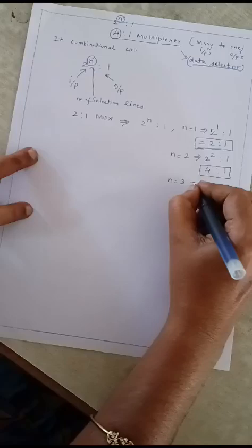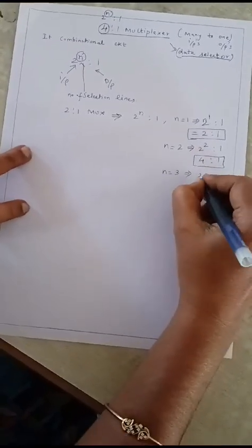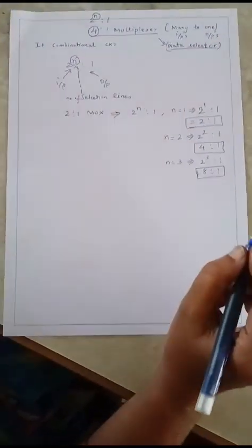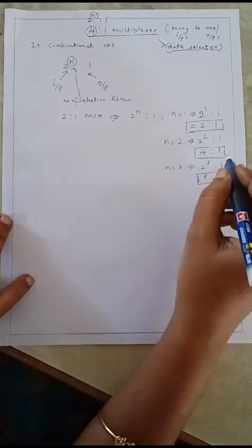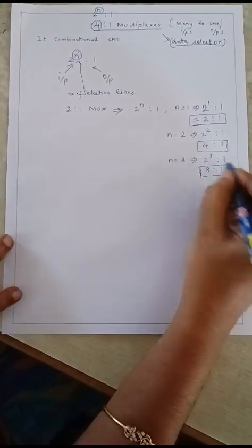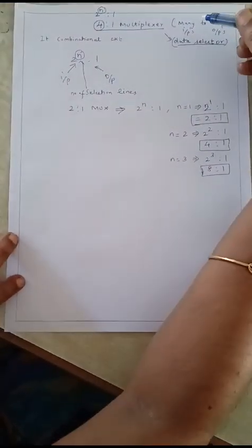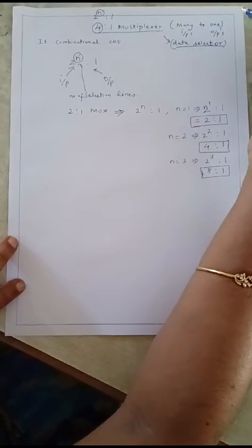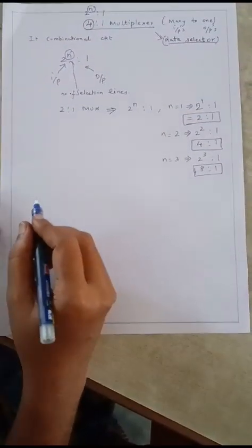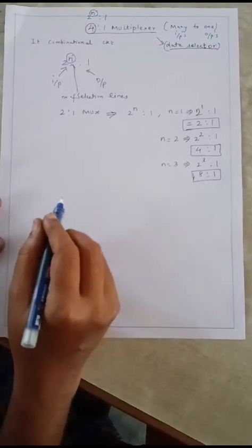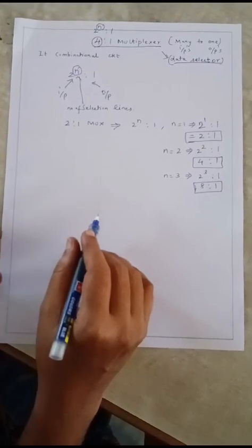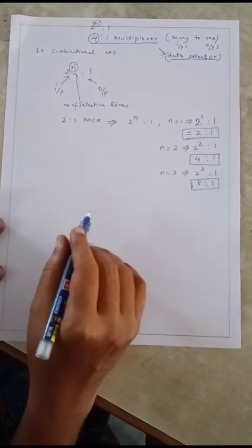Similarly, if n equals 3, then 2 to the power 3 gives 8, so an 8-to-1 multiplexer can be designed. Likewise, depending on the number of selection lines, the number of inputs for the multiplexer is calculated, and it produces only one output at a time. The multiplexer is called a many-to-one circuit — many inputs and only one output — and its other name is data selector, whether it is a 2-to-1, 4-to-1, or 8-to-1 multiplexer.